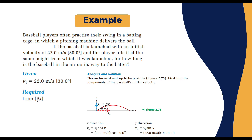Given: initial velocity 22 m/s at 30 degrees. Required: delta t, the time until the ball reaches the batter. To solve this, we draw an x and y axis. We have v-initial as a vector at 30 degrees. We set the convention: to the right is positive in x, and upward is positive in y.